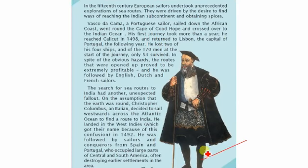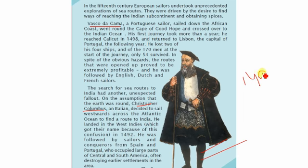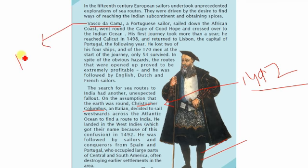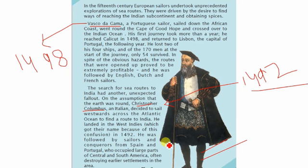Vasco da Gama discovered the sea route to India, as discussed earlier. Christopher Columbus, born in Portugal in 1492, set out to find India but instead discovered America. This is all about this chapter — we have now completed it. In the next class we will do the exercise for this chapter.